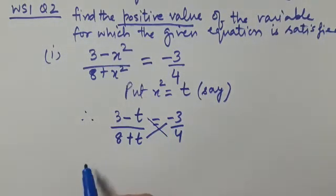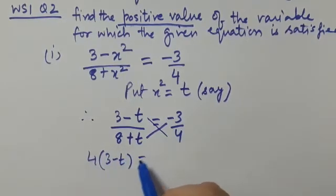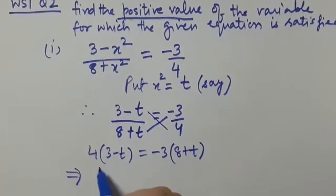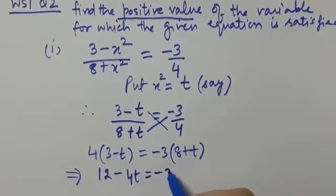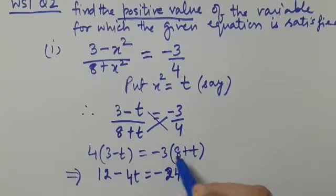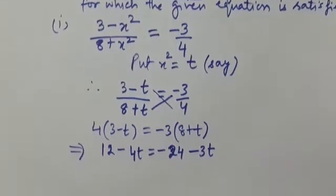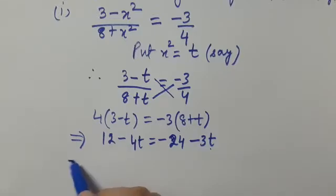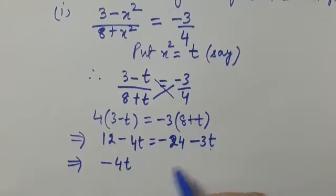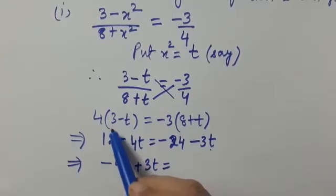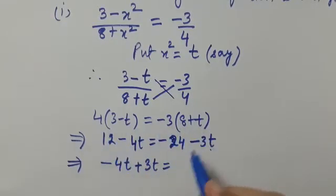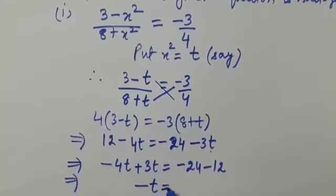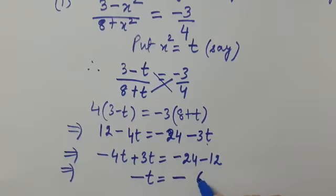So 4 × (3 − t) = −3 × (8 + t). When you simplify you get 12 − 4t = −24 − 3t. Now transpose −3t to the left side, giving −4t + 3t, and transpose 12 from the left to the right side, so it becomes −12.